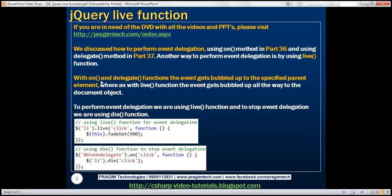With on and delegate functions, the event gets bubbled up to the specified parent element, whereas with the live function, the event gets bubbled up all the way to the document object. Let's understand what we mean by this statement with an example.